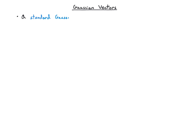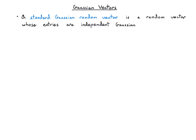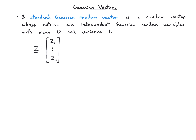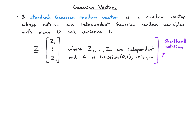Let's introduce the family of Gaussian vectors. A standard Gaussian random vector is a random vector whose entries are independent Gaussian random variables, standard in the sense that each has mean 0 and variance 1. We write this as a vector Z with entries Z1 through Zm, where Z1 through Zm are independent and each is Gaussian(0,1). The shorthand notation is to write the vector Z distributed as the zero mean vector and identity covariance matrix.